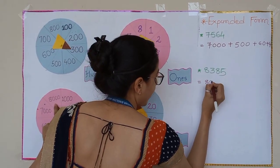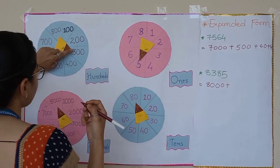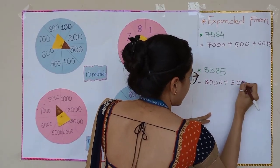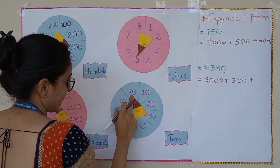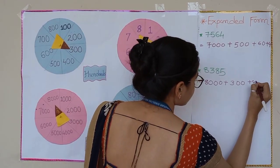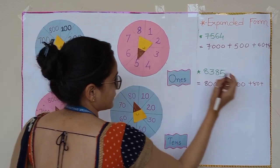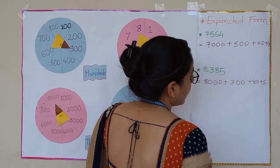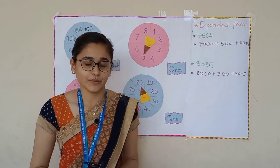Now let's write down the expanded form: eight thousand plus three hundred plus eighty plus five. Hope you like this activity — thank you!